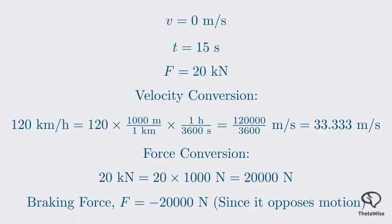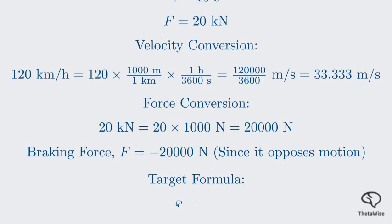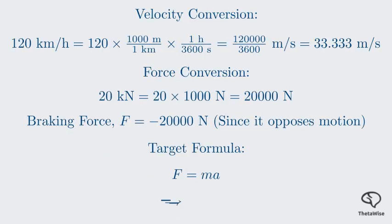Now we have our converted values. We need to find the mass M. Looking at our formulas, we see that mass is part of Newton's second law. Newton's second law states that force equals mass times acceleration. F equals ma. If we rearrange it to solve for mass, we get M equals F divided by A. This is our target formula. We have the force F, but we don't have the acceleration A. This means we have to find the acceleration first.